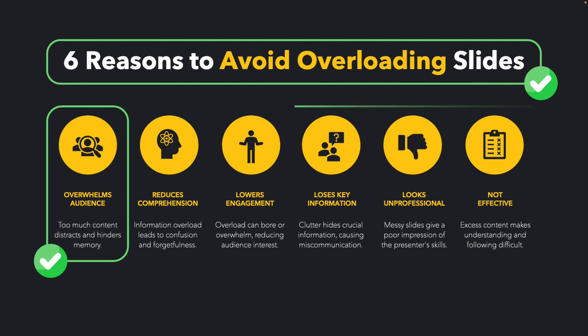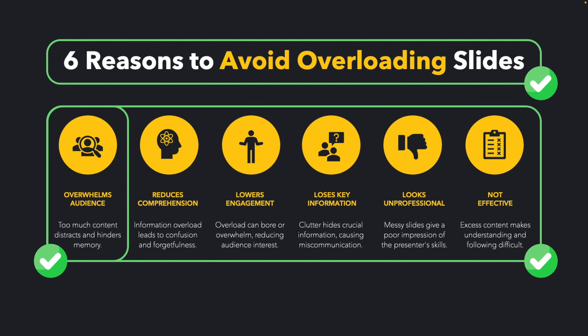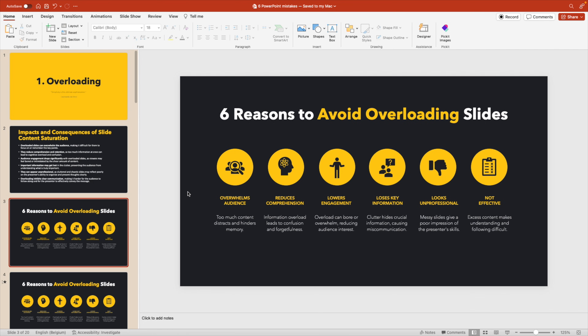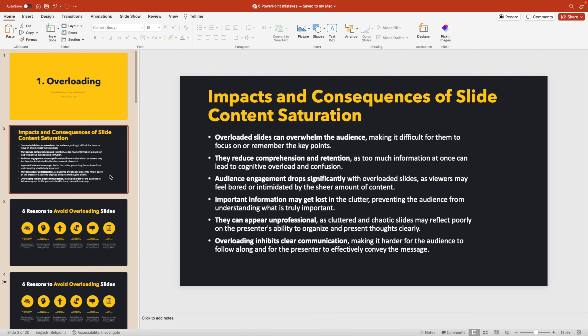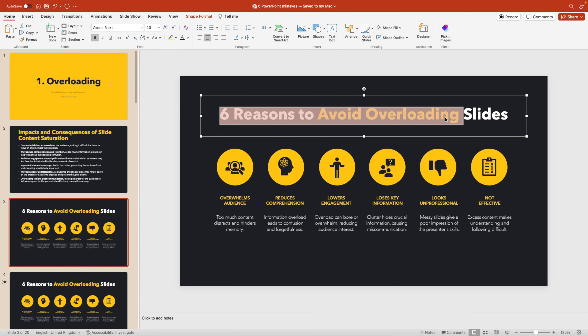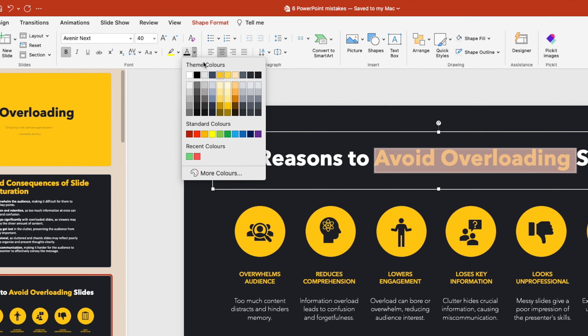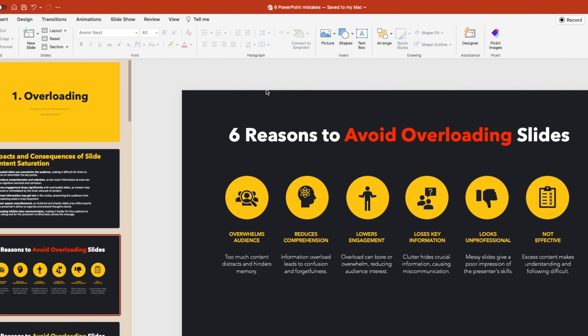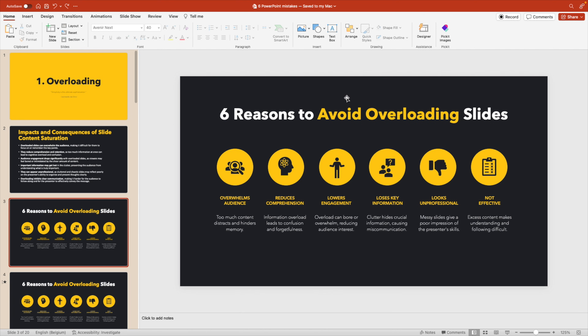We combine this six times so we have a nice overview of the six reasons, making it a lot more digestible for the audience. Now jumping into the actual slide — the title is a simpler rephrasing where we use white text, then select a few words and give them a different font color to make them stand out, using yellow to keep a consistent theme.